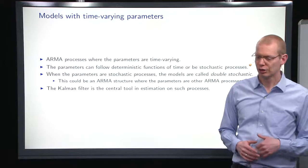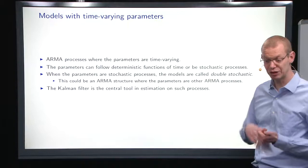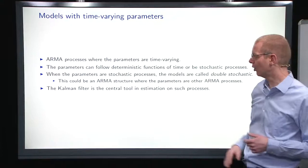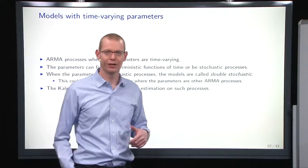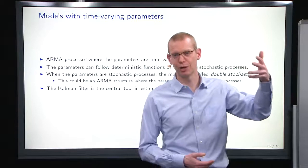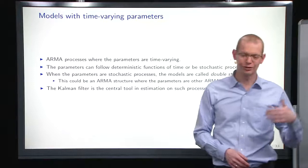So what we can do here is, among other things, we can have an ARMA process where the parameters are changing over time. And you can have the parameters that can be either more or less deterministic functions or they can be stochastic processes. When the parameters are stochastic processes as we had in the previous example or the previous slide, then we call them double stochastic because we have both stochastic process for the parameters and a stochastic process for the observations.